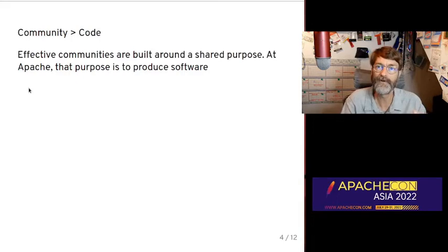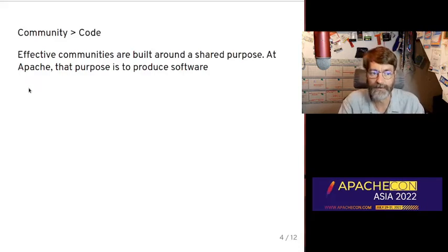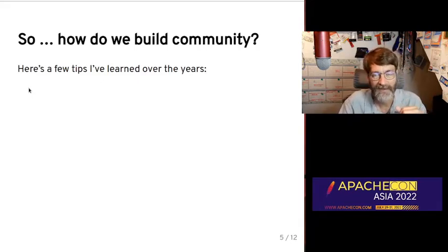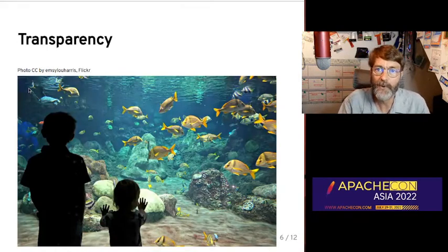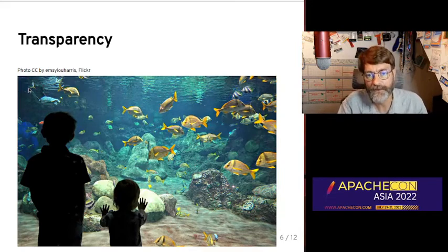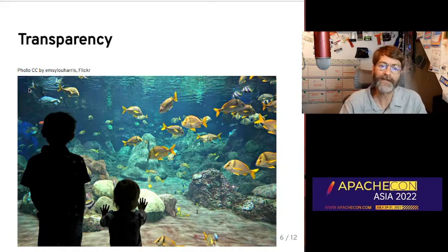At Apache, we do focus on the community because we believe that a healthy community leads to healthy development. So how do you go about building community? This is the center of my talk. Here are a few tips that I've learned over the past few years. The most important aspect of building community is transparency. Everything must be done where everyone can see it. Anything that happens in secret or in private excludes people.